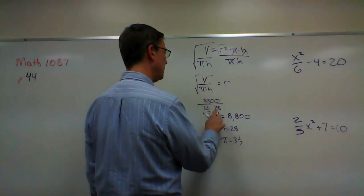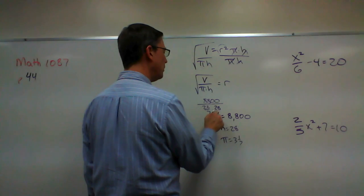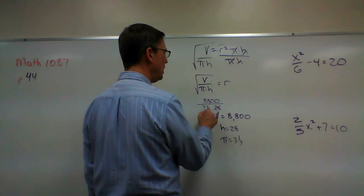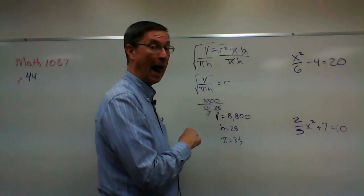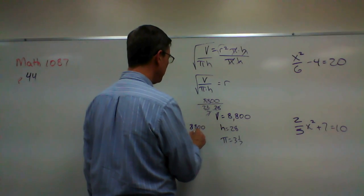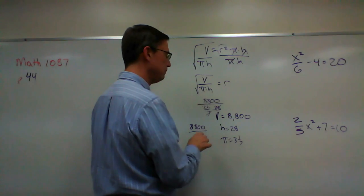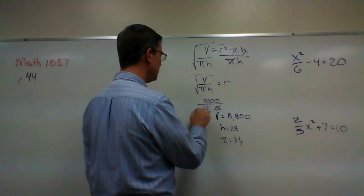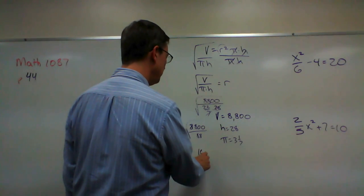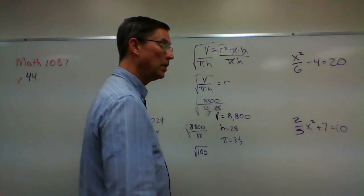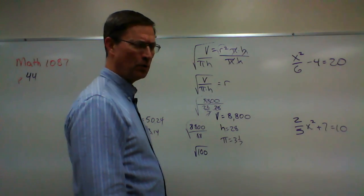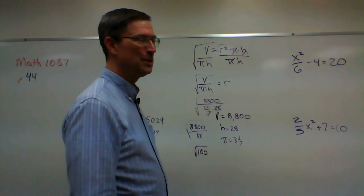Now we do the square root of both sides. So r equals the square root of the volume divided by pi times h. The volume is 8,800 over 22/7 — let's turn that into 22 over 7 — times 28, because the height is 28. If we put that over 1, we can see that 7 cancels against 28 and I have 4. 22 times 4 is 88. So I have 8,800 divided by 88, which simplifies to 100. Now, what is the square root of 100? I don't even think you need your calculator for that one — you can finish that.